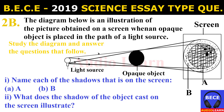Question 2b: The diagram below is an illustration of the picture obtained on a screen when an opaque object is placed in the path of a light source. Study the diagram and answer the questions that follow. Question 2b(i): Name each of the shadows cast on the screen. A is the umbra or total shadow, and B is the penumbra or partial shadow.